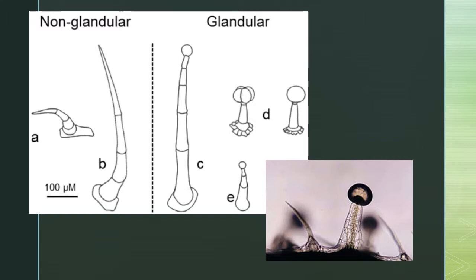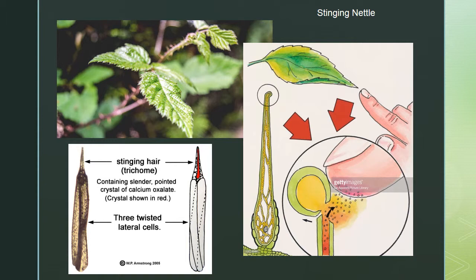There are many varieties of trichomes — glandular or non-glandular. Glandular ones usually contain a toxin. For example, the stinging nettle: each trichome hair has cells twisted very tight, and when the top is engaged, those lateral cells untwist and release the toxin. The tip acts almost like a hypodermic needle, delivering the toxin into your skin — and it really does hurt.